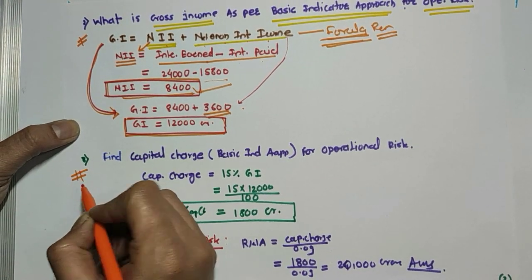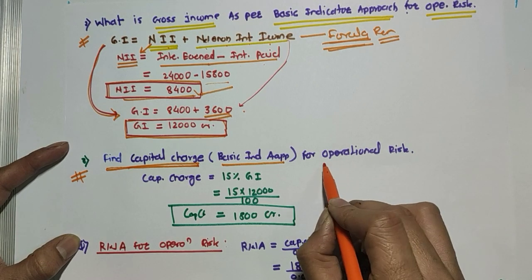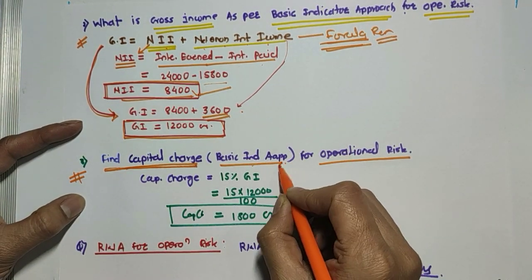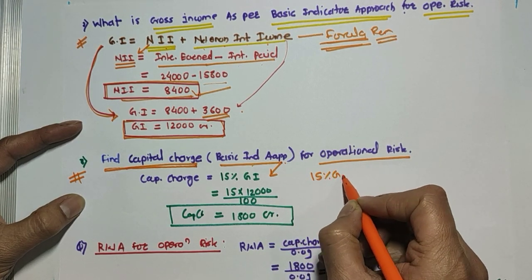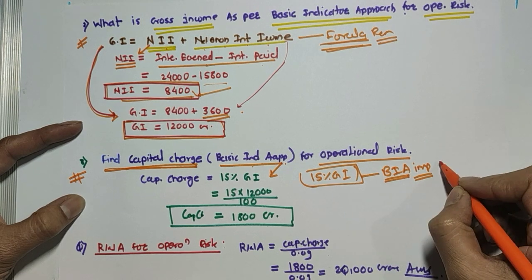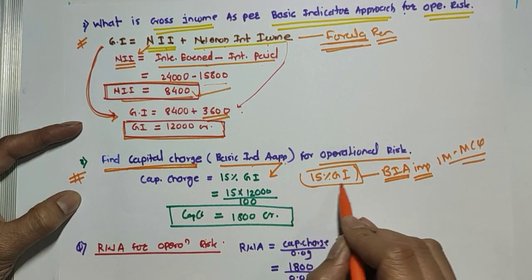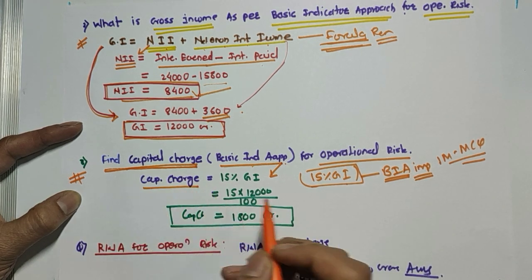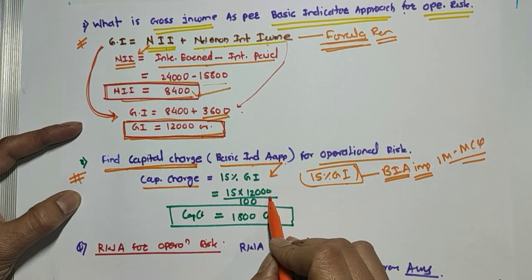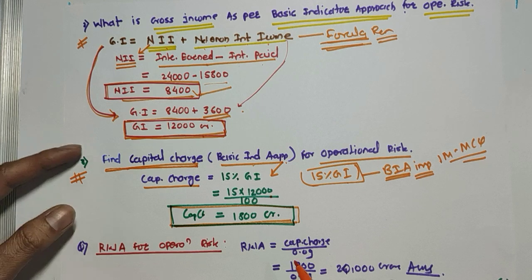The third question asks to find the capital charge by the Basic Indicator Approach for operational risk. According to the Basic Indicator Approach, the capital charge is 15% of gross income. This can come as a one-liner one-mark MCQ, so remember it. Capital charge = 15% × gross income = 15% × 12,000 = 1,800 crores.